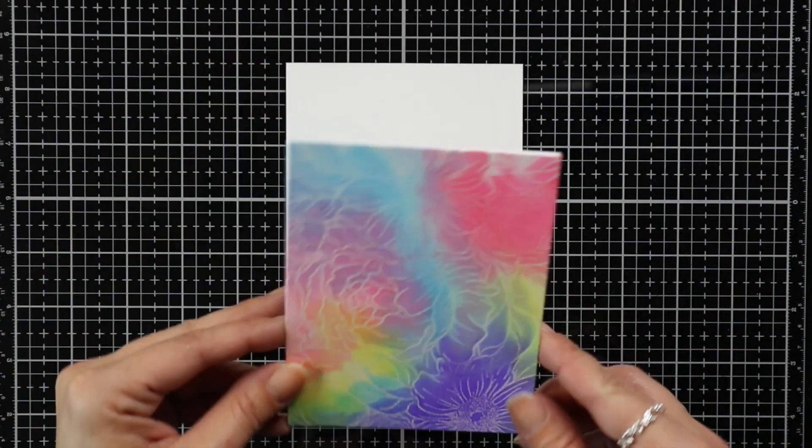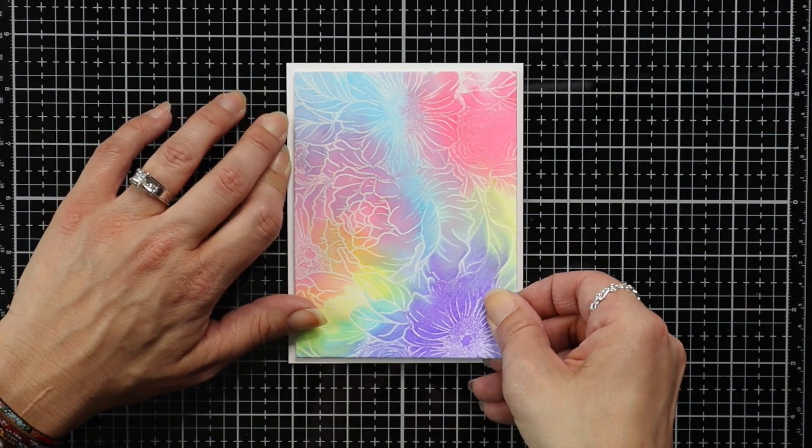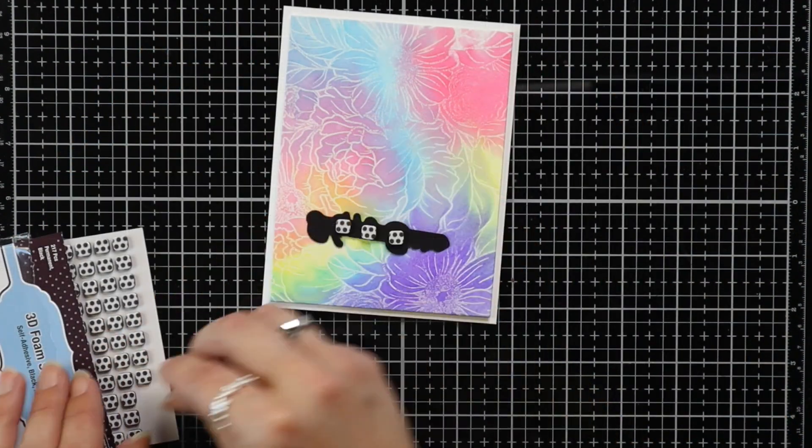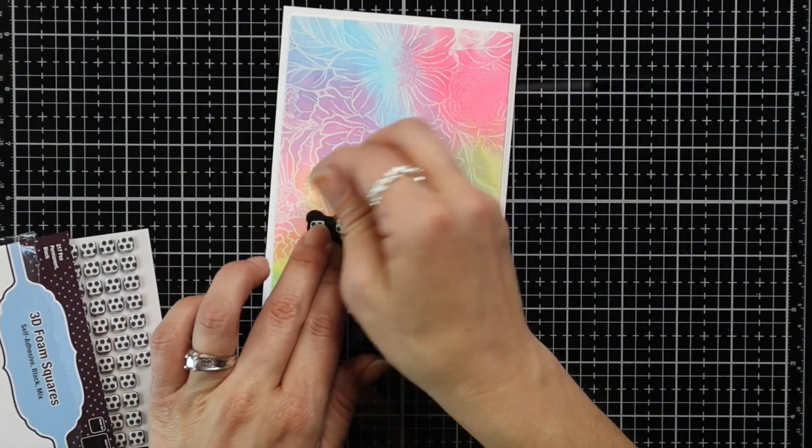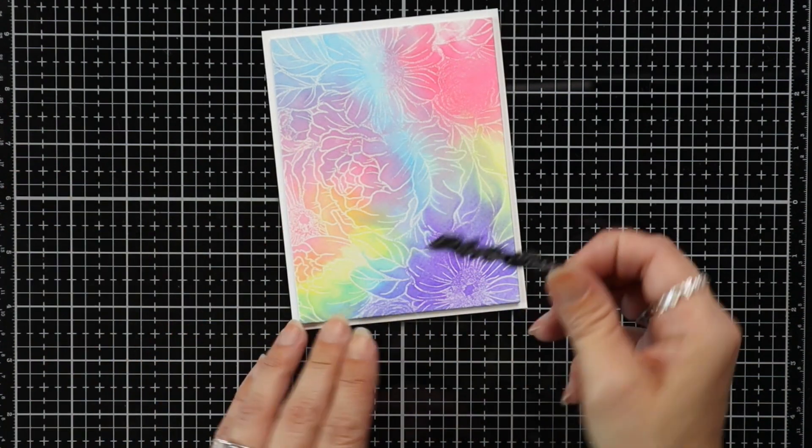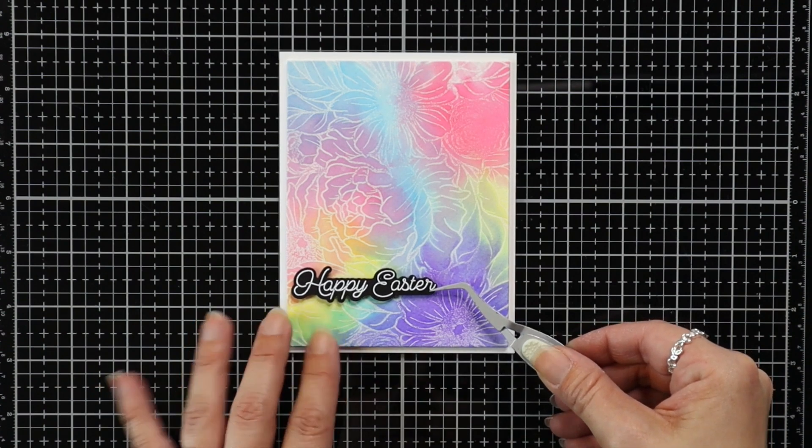So you could also use foam tape to add your dimension. I just really like using the cardstock in this case because it is watercolored and I want to make sure that entire background is staying flat. Then I'm adding black foam squares to the back of my sentiment and I'm going to attach that to the front of the card. So you're seeing a lot of this colorful background.